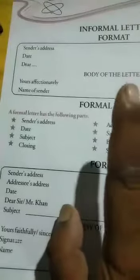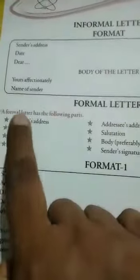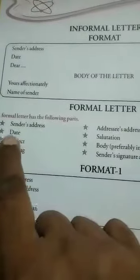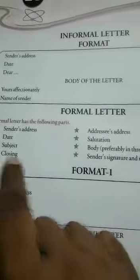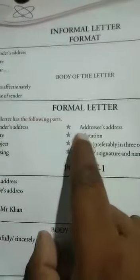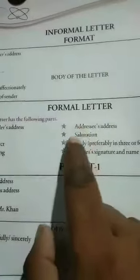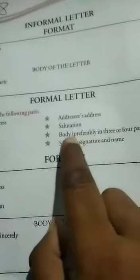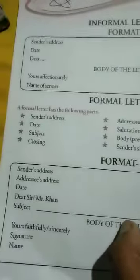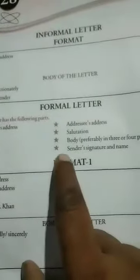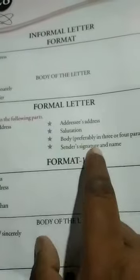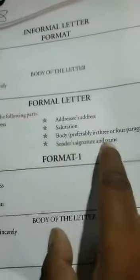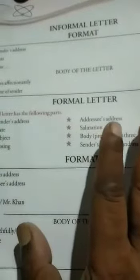After giving a space, there should be a subject — what is the topic of the letter. After that, giving a space, there should be a salutation, such as 'Respected Sir' etc. After that comes the body of the letter, then the closing, and finally the sender's signature. Generally the sender's name is written at the bottom on the left-hand side.